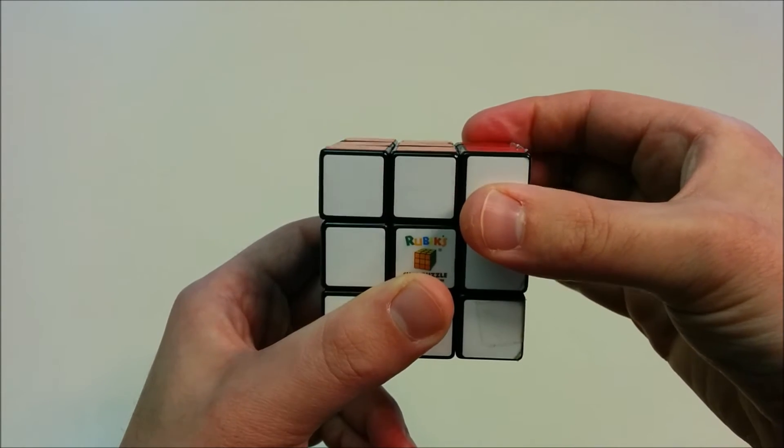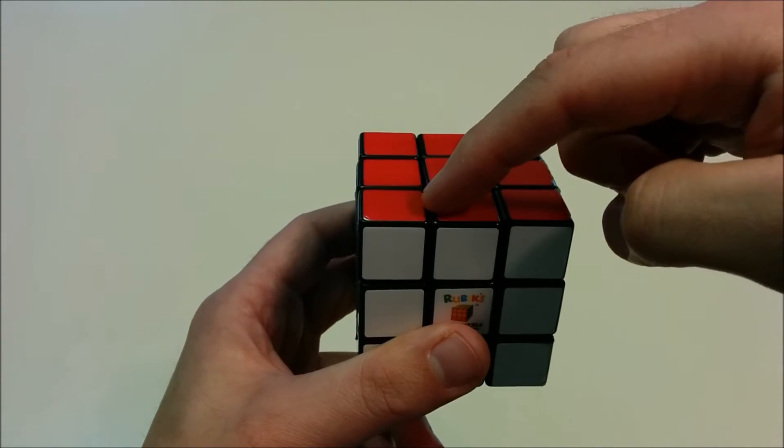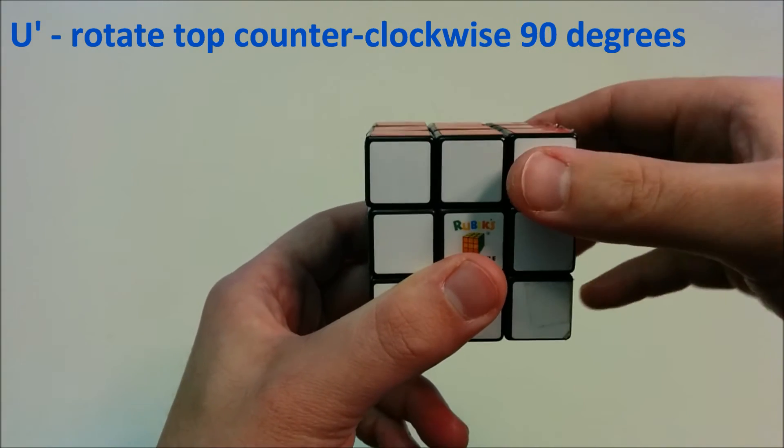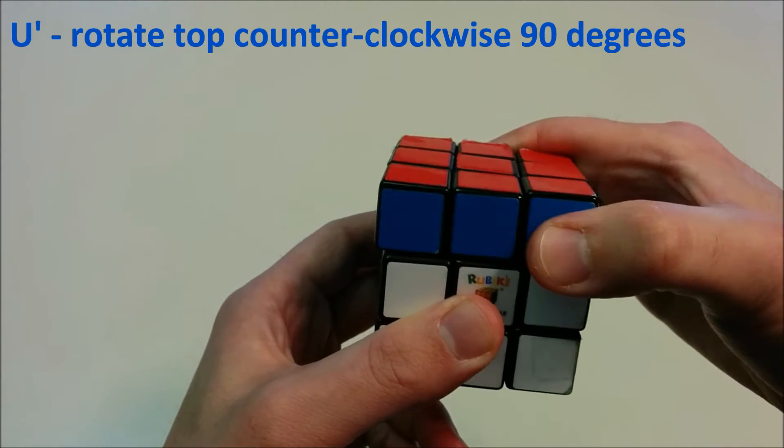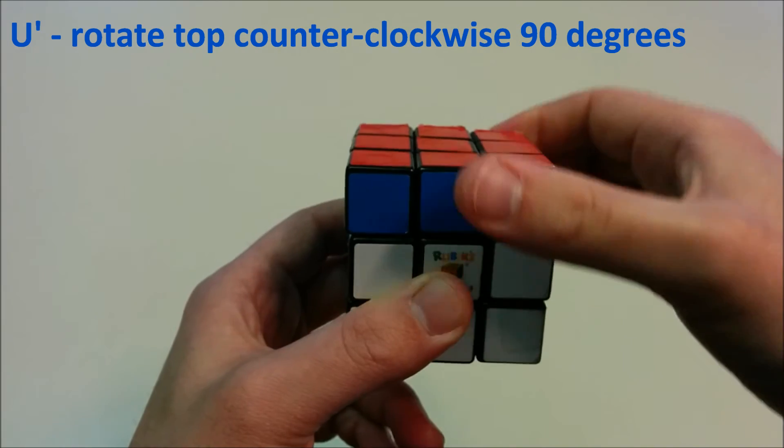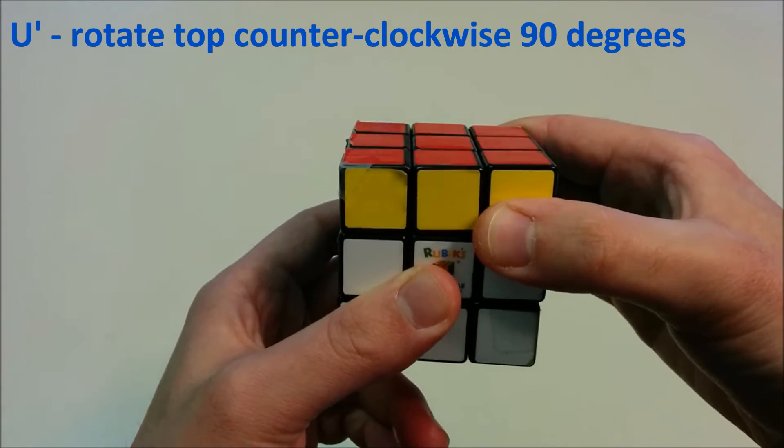And here we bring U once more and bring it back to the original position. If we rotate the upper face 90 degrees counter-clockwise, that's U prime or U inverse.